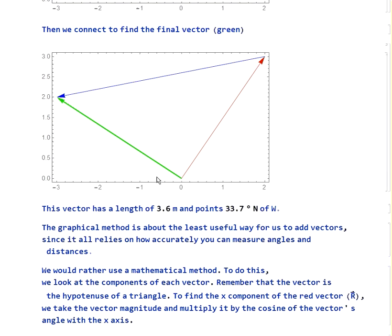We could then measure this with a ruler and a protractor, and we would find it has a length of 3.6 meters, and it points 33.7 degrees north of west.